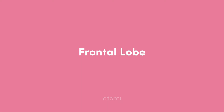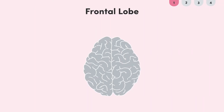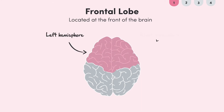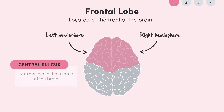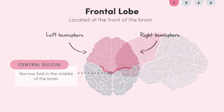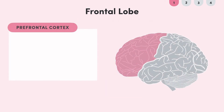The first lobe we'll look at is the frontal lobe. As you can probably tell by its name, this lobe is located at the front of the brain and is split into the left and right hemispheres. It stretches all the way back to the central sulcus, which is a narrow fold in the middle of the brain. There are three main parts of the frontal lobe that you need to know.